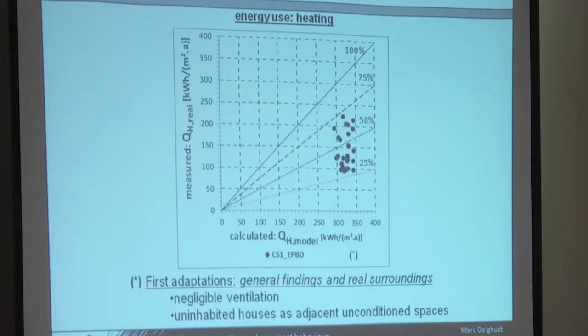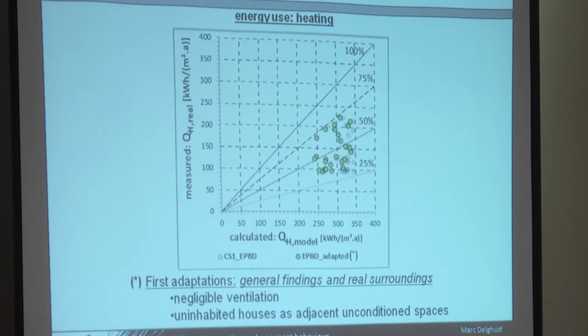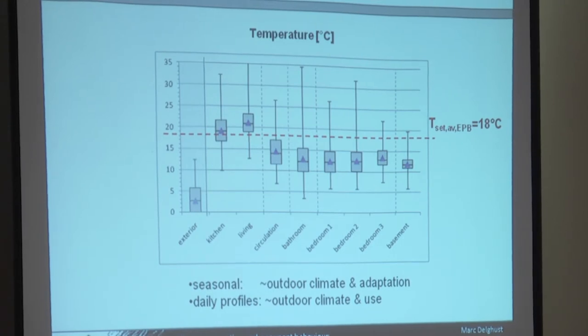If you take that into consideration — these were the results from the calculation method as done for energy assessment officially in Belgium — as we know that ventilation in the living room is almost negligible, and some houses were uninhabited so we took the neighbouring house not being heated into account in the heat balance — trying to take all those general aspects into consideration, it wasn't much of an improvement. But those are general findings. We could go further and look at the fact that not everybody heats in the same way. Here you see box plots of measured temperatures during one to two representative winter weeks for exterior temperatures between 0 and 5 degrees, showing the living room and kitchen heated the most, but with a discrepancy between 10 and 32 degrees.